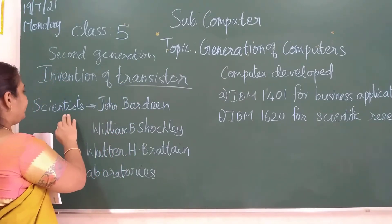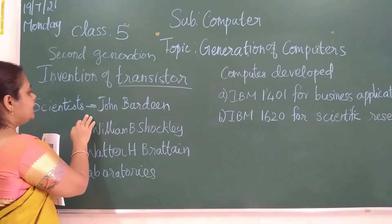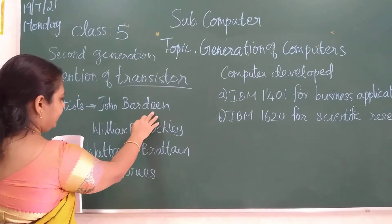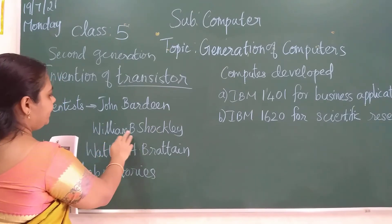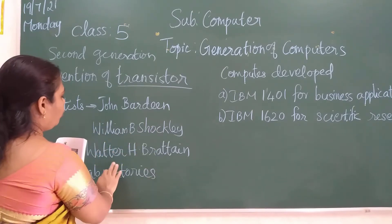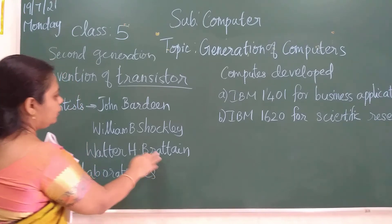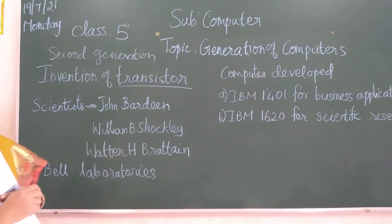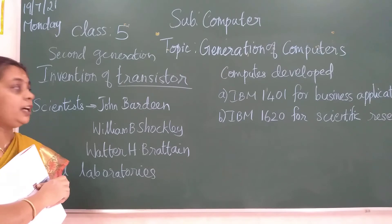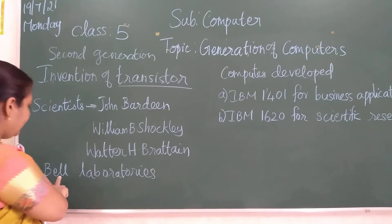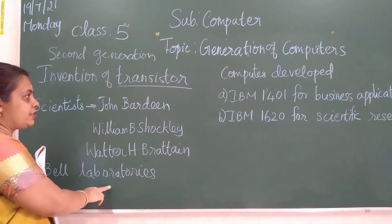Once again I repeat the names of the scientists: John Bardeen, William B. Shockley, and Walter H. Brattain. These three people contributed to the second generation of computers, developed at Bell Laboratories.